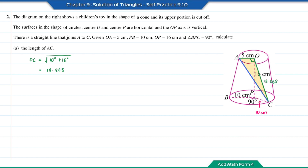So now we can find the length of AC. AC is equal to the square root of 5 squared plus 18.868 squared, which is equal to 19.519.